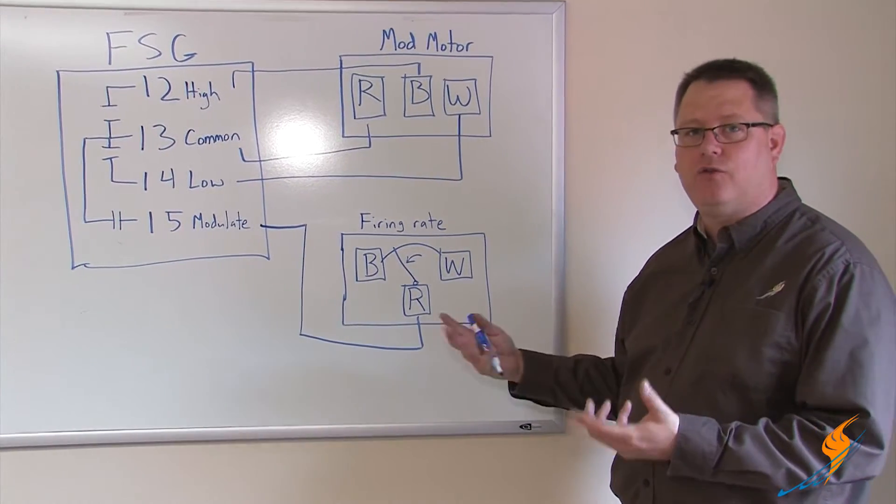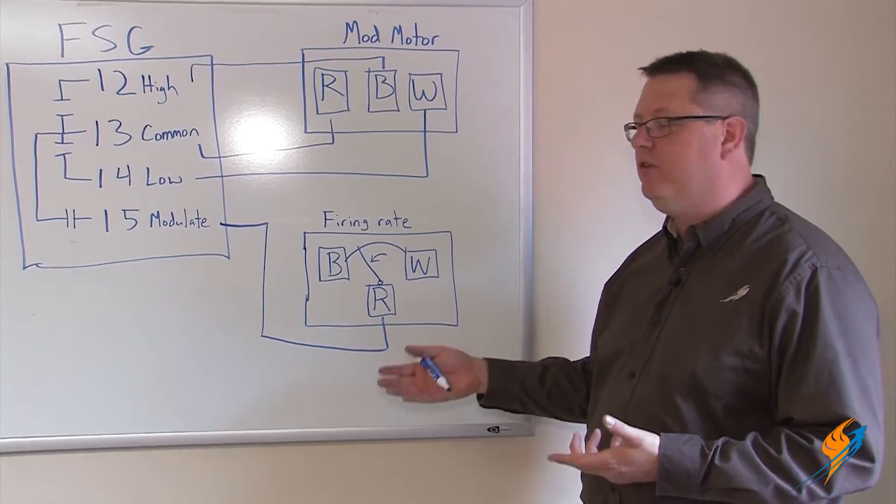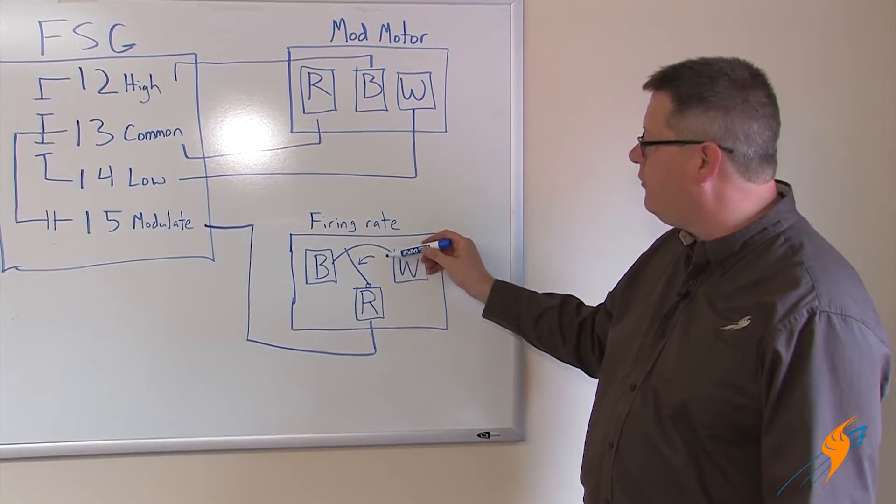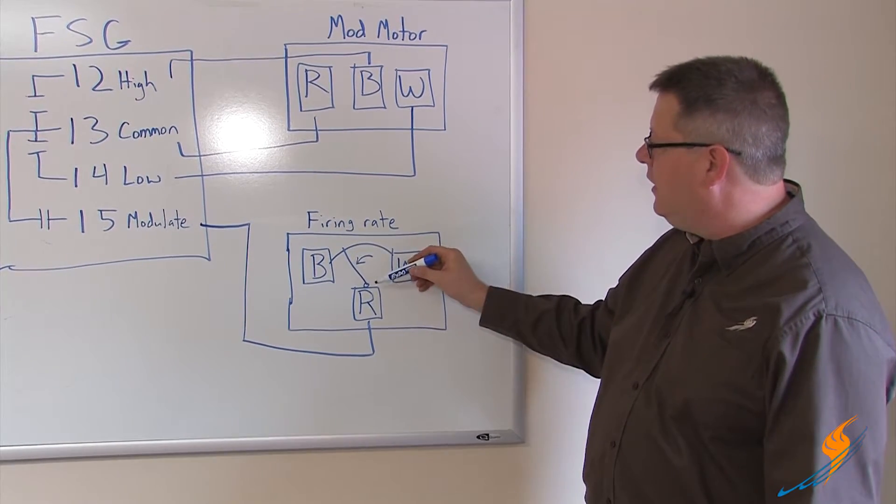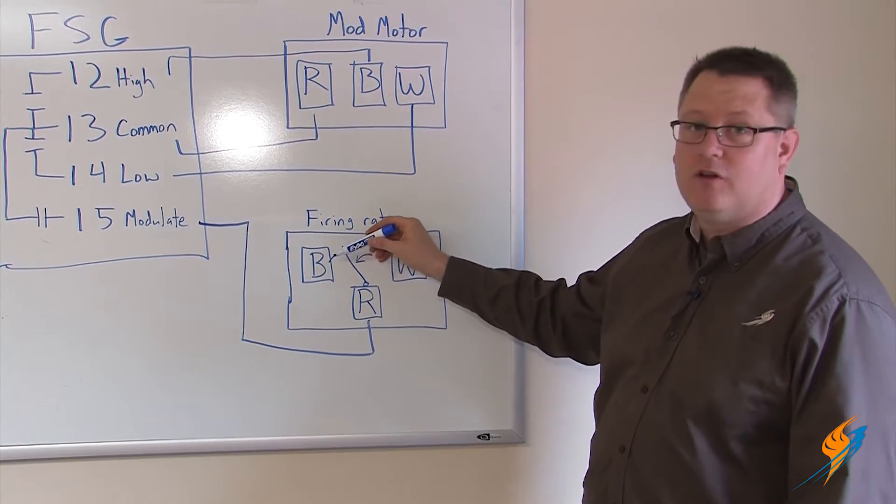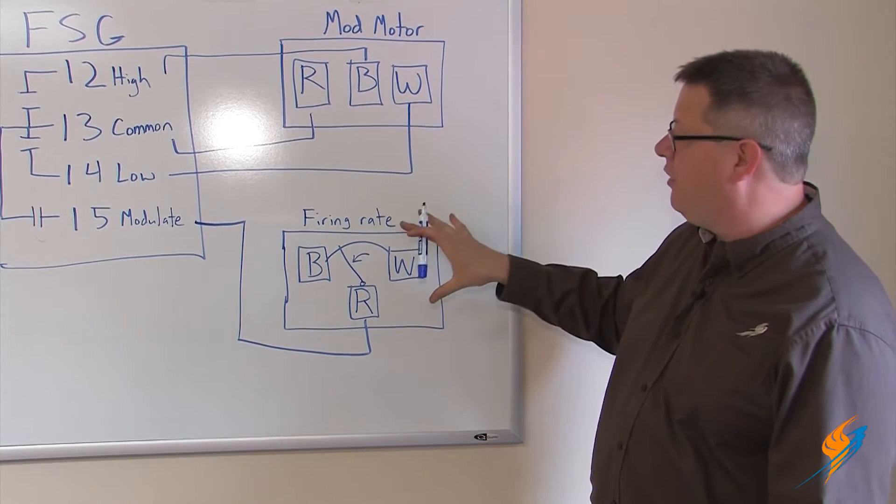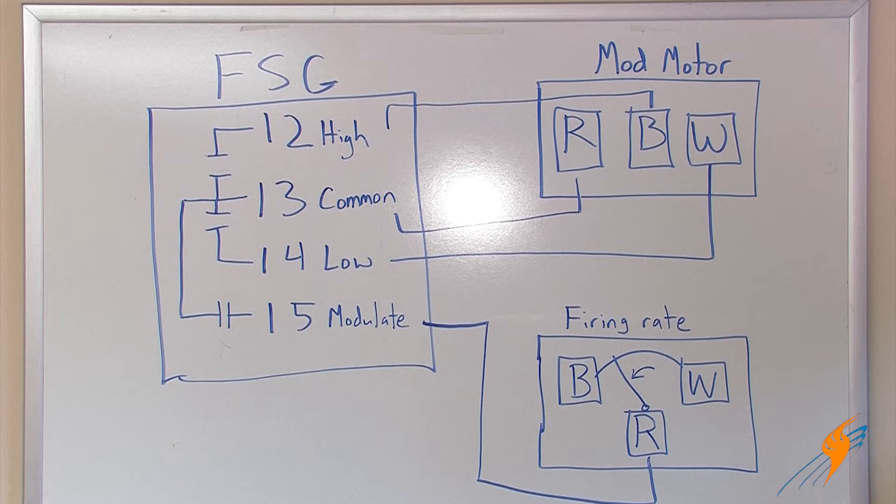Now our firing rate control can respond to changes in pressure. As pressure drops on the system, it moves the potentiometer closer to the B terminal. That B terminal gets connected to the mod motor.